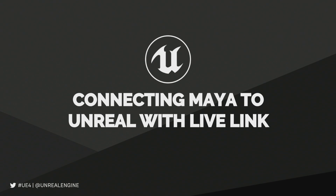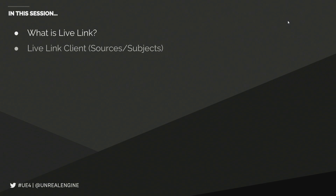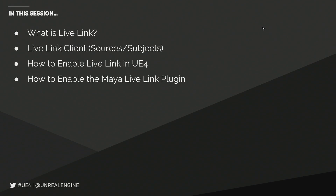We have quite a bit to cover here in a short amount of time, so I'm going to jump into a quick PowerPoint and outline what we're going to talk about today. First and foremost, what is Live Link and how does it work? We're then going to talk about the Live Link client, which powers sources and subjects, and we're going to talk about what those are. We'll then show you how to enable Live Link inside of Unreal Engine 4 and how to enable the Maya Live Link plug-in.